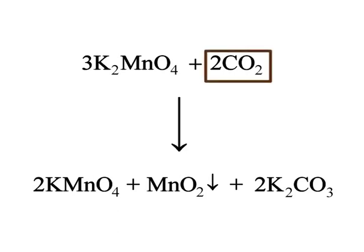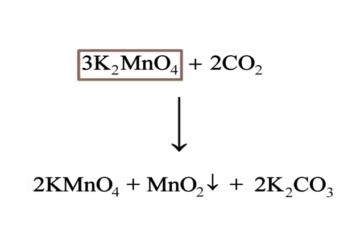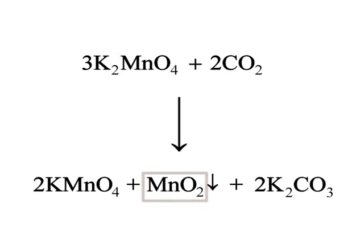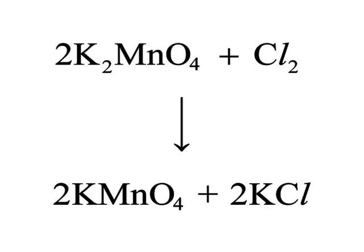Out of these methods, in the carbon dioxide method, the yield of potassium permanganate is low as one third of the original manganate is converted to manganese dioxide. However, potassium carbonate is formed as a by-product and can be used for the oxidative fusion of manganese dioxide. In the chlorine process, potassium chloride is obtained as a by-product.